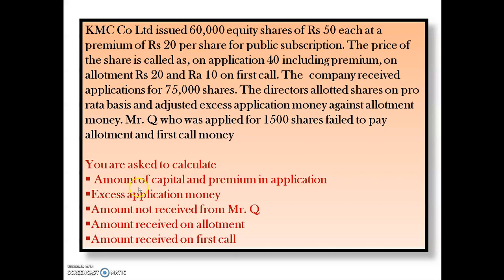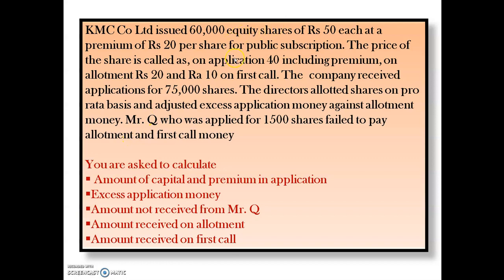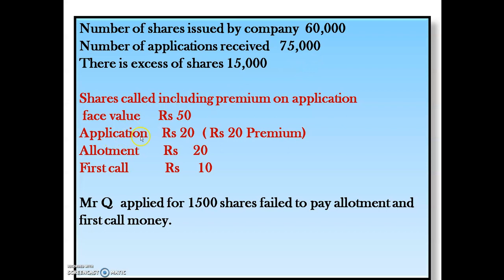This is a case of over-subscription because applications received, 75,000, are more than the number of shares issued by the company, 60,000. The excess is 15,000 shares — the difference between 75,000 and 60,000. The face value is ₹50. On application: ₹20 capital and ₹20 premium, totalling ₹40 including premium. On allotment: ₹20, and on first call: ₹10.